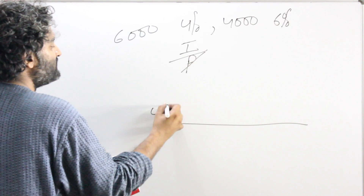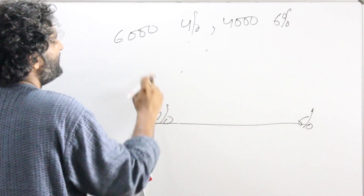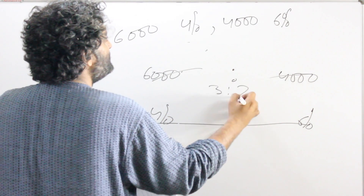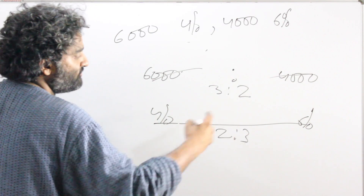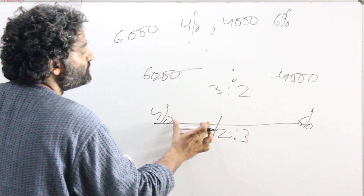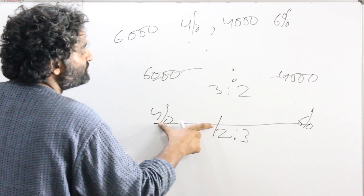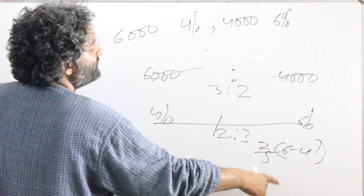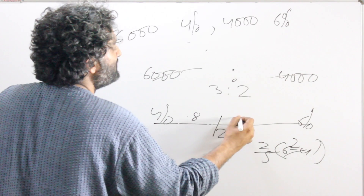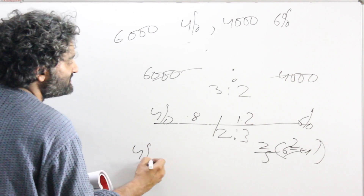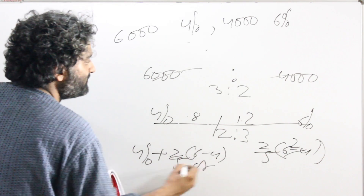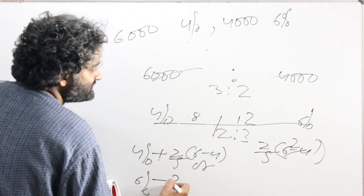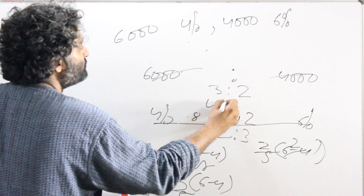So draw the line here. Put the rate on one side — 4% — and the rate on the other side — 6%. Above the rate, put the weight: 6,000 on one side and 4,000 on the other. Take the ratio form: 6000 to 4000 becomes 3 is to 2. Flip it, it becomes 2 is to 3. The scale is divided into two parts in ratio 2 is to 3. This part is 2/5 of 6 minus 4, which is 2, giving 0.8. So 4% plus 0.8 or 6% minus 1.2 both give 4.8%.